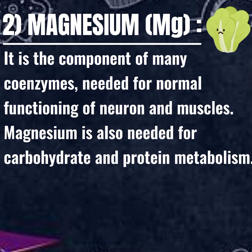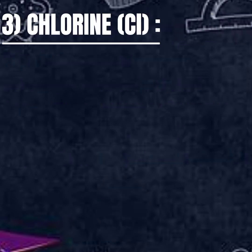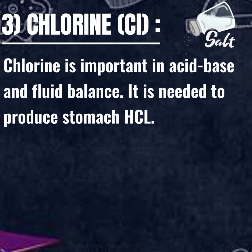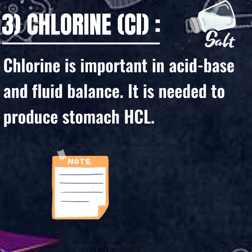Magnesium: it is the component of many coenzymes needed for normal functioning of neurons and muscles. Magnesium is also needed for carbohydrate and protein metabolism. Chlorine: chlorine is important in acid-base and fluid balance. It is needed to produce stomach HCl.